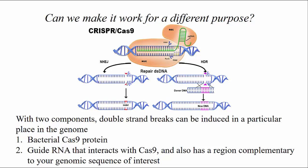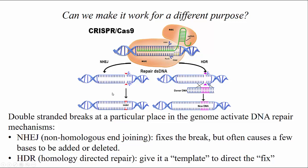There are two different kinds of repair mechanisms in eukaryotic cells. Non-homologous end joining will fix the break but often makes a little mutation in the process, so if you were interested in breaking a particular gene, you might want to activate this system. The homology-directed repair mechanism is a different type: if you provide a copy of how you want that region of the genome to be fixed, the cell will use that information and fix that region of the genome to match what you provided.